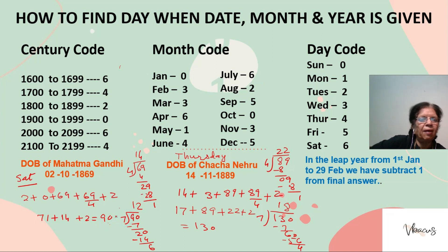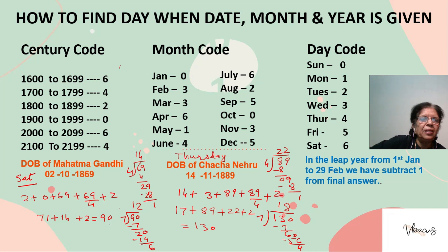Now 90 should be divided by 7, since there are 7 days in a week. When you divide 90 by 7, the quotient is 12 and the remainder is 6. We choose the remainder. Going to the day code, 6 corresponds to Saturday. So Mahatma Gandhi was born on Saturday.